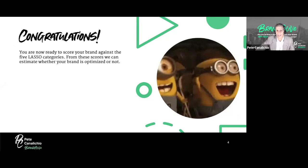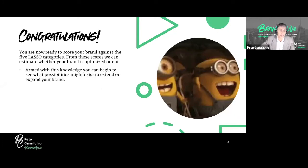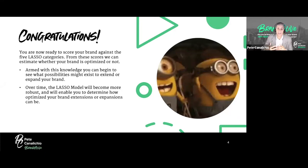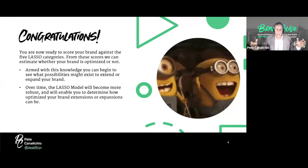You're now ready to score your brand against the five LASSO categories. From these scores we'll estimate whether your brand is optimized, and armed with this knowledge you can begin to see what possibilities might exist to extend or expand. Over time the LASSO model will become more robust — the data set will grow and we'll go from just 'under-optimized' and 'optimized' to five gradations: under-optimized, slightly under-optimized, optimized, slightly over-optimized, and over-optimized.